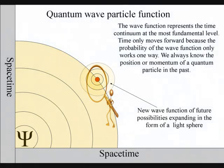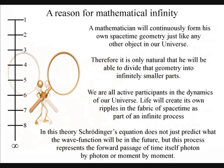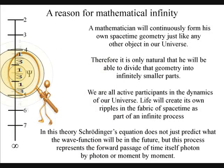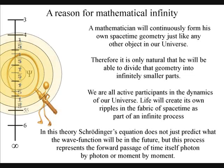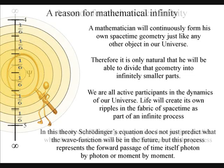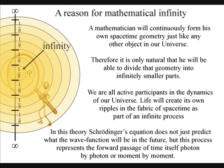This is part of a continuous process of change or creation. Therefore we have a true infinity that can continuously be halved or divided over a period of time. A mathematician will be able to divide any number into infinitely smaller parts because of this process.